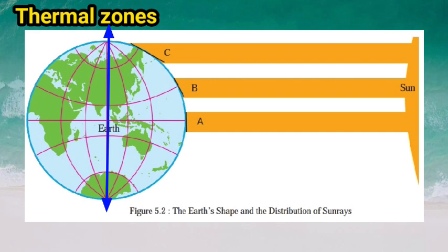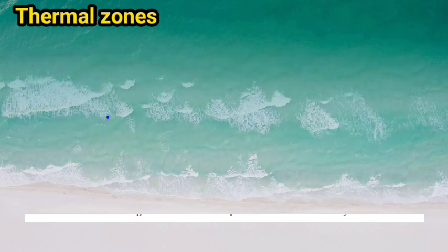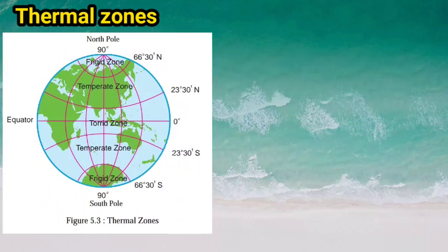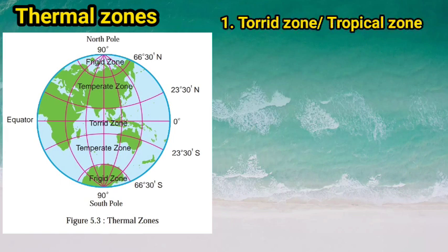This condition leads to the unequal distribution of heat received from the Sun, which results in decreasing temperature from the equator towards the north and south poles. Based on this distribution of temperature, the Earth is divided into three zones called thermal zones.